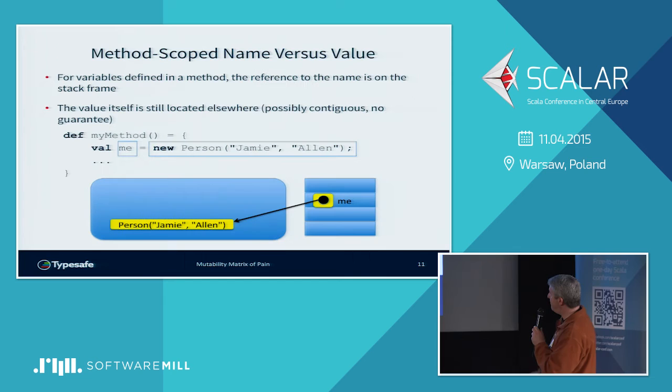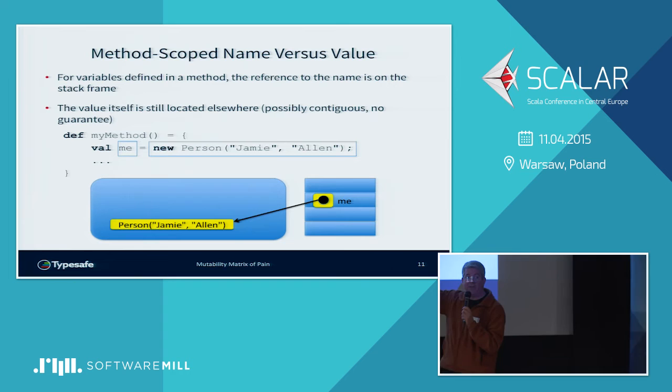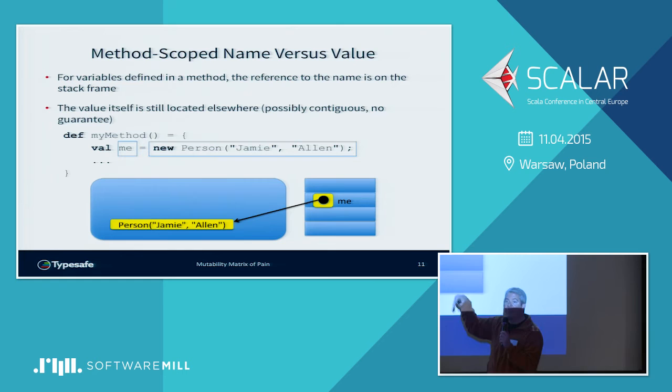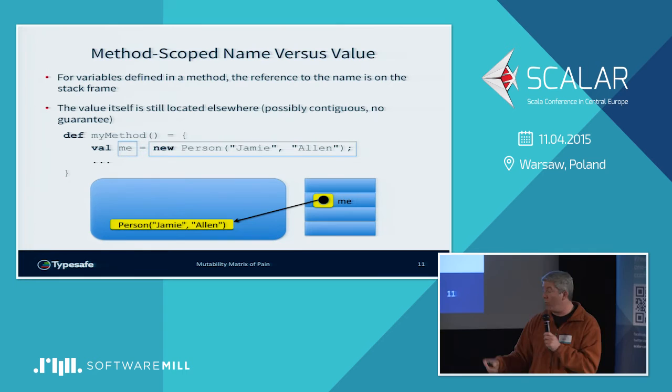When we're talking about a method-local variable, we have slightly different semantics. The great thing is it implies a certain level of thread safety because the thread is the only one that has a handle to the instance — that pointer lives in the stack frame, not in the heap. Therefore, while the value of person is still in the heap and somebody else could theoretically see it, they don't have a reference to it, so you don't have to worry about it at all.